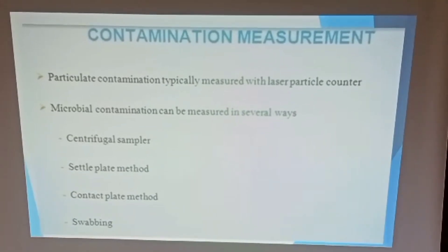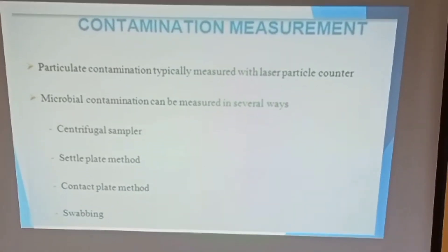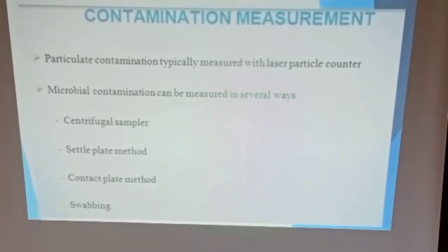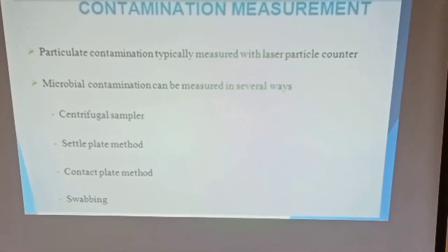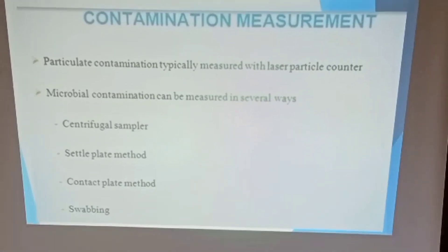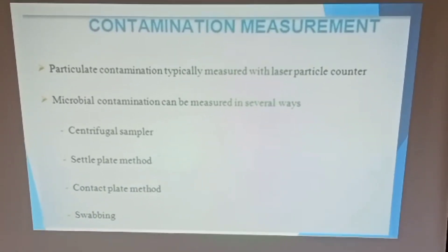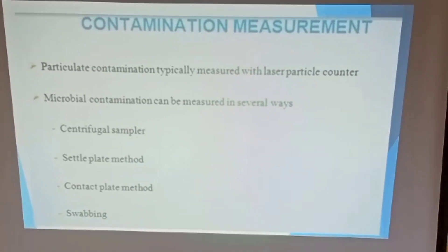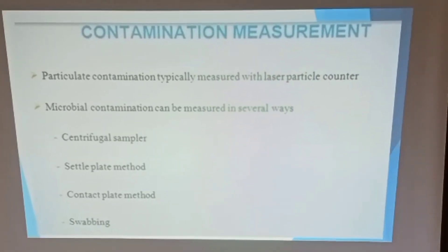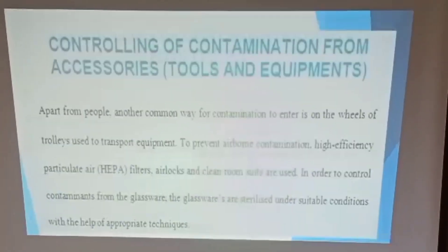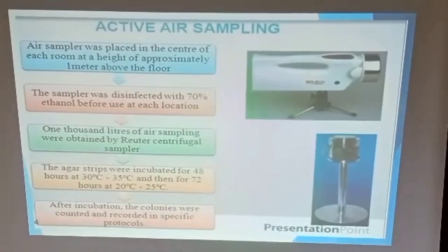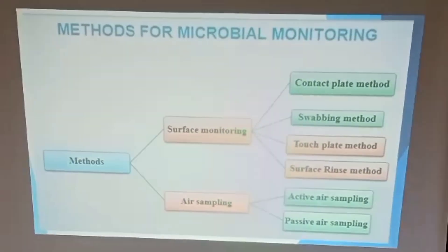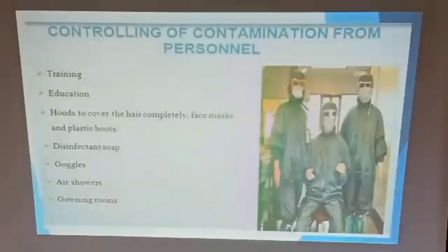Contamination can be measured using several methods. Particle contamination is measured using a laser particle counter, which uses alpha, beta, and gamma counters. Microbial contamination can be measured using a centrifugal sampler, settle plates, contact plates, and swabbing methods, as described earlier.